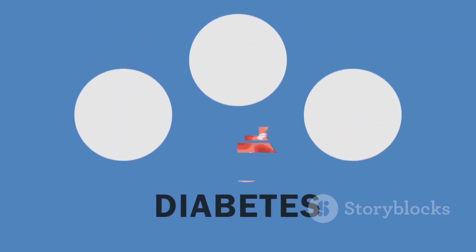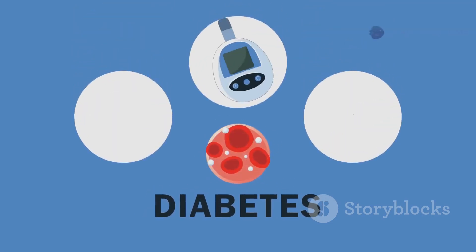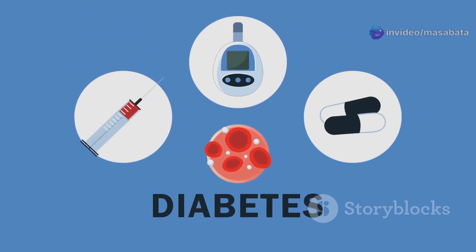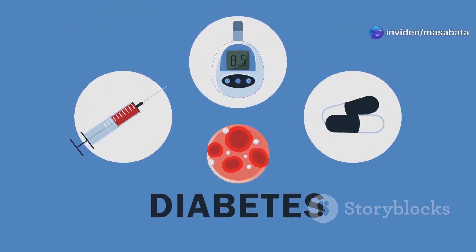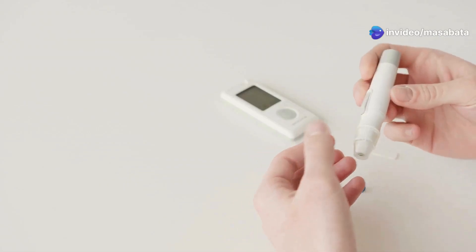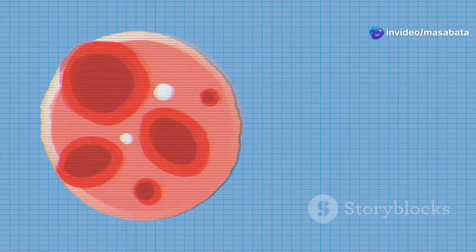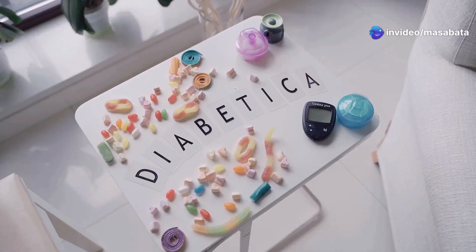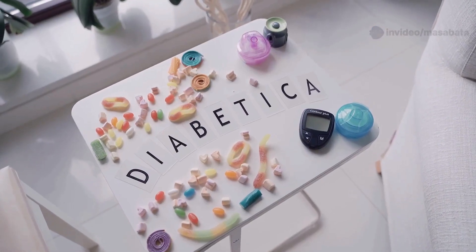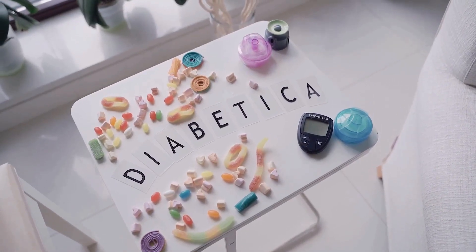If the pancreas cannot produce insulin, it leads to a condition called diabetes mellitus. Glucose builds up in the blood, cells can't absorb it efficiently, and symptoms include thirst, fatigue and frequent urination.